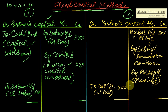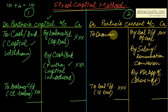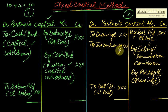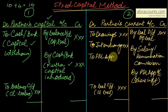On the debit side of the partner's current account: drawings — since the partner has taken money out, it reduces the balance; interest on drawings — again charged by the firm, reducing the balance; and P&L appropriation account — if there is a loss, it is debited. Both drawings and interest on drawings reduce the capital balance, so they appear on the debit side.